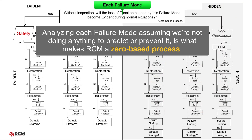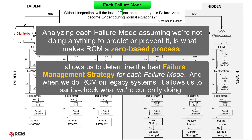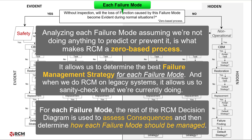Analyzing each failure mode, assuming we're not doing anything to predict or prevent it, is what makes RCM a zero-based process. It allows us to determine the best failure management strategy for each failure mode. And when we do RCM on legacy systems, it allows us to sanity check what we're currently doing. For each failure mode, the rest of the RCM Decision Diagram is used to assess consequences and then determine how each failure mode should be managed.